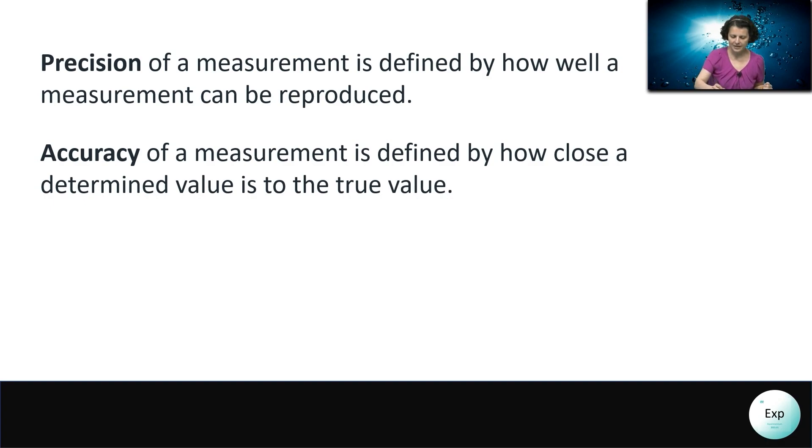Accuracy is about getting close to a known or accepted or true value. So in that case, for example, if we know that the boiling point of water should be under normal conditions 100.0 degrees Celsius and we have 99.8 degrees Celsius, that could be quite accurate because it's fairly close to the true value.